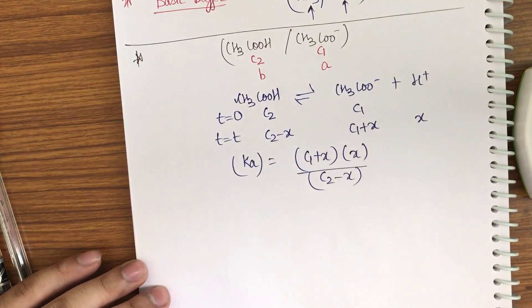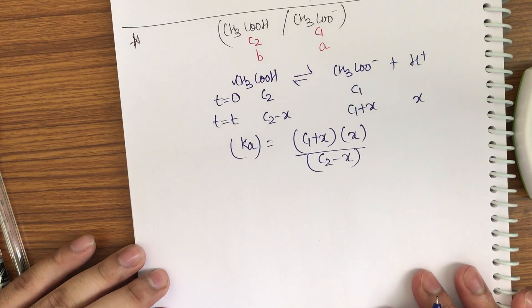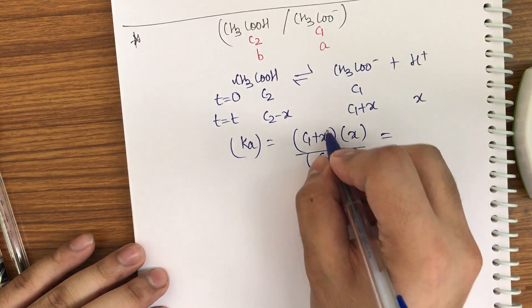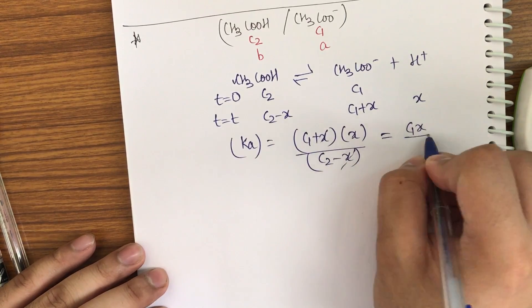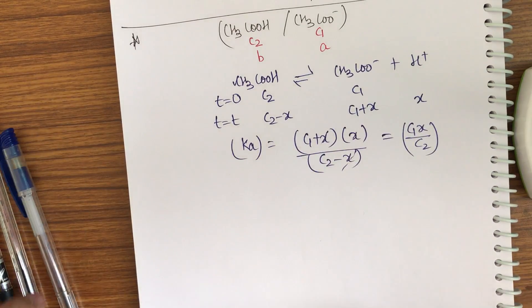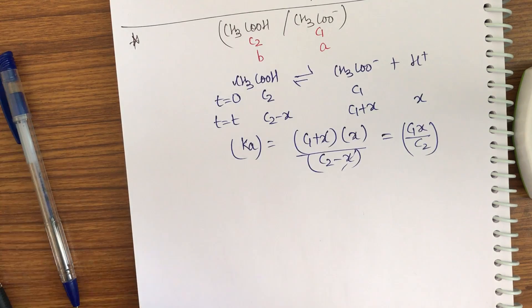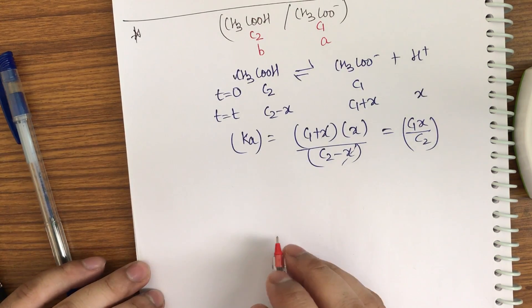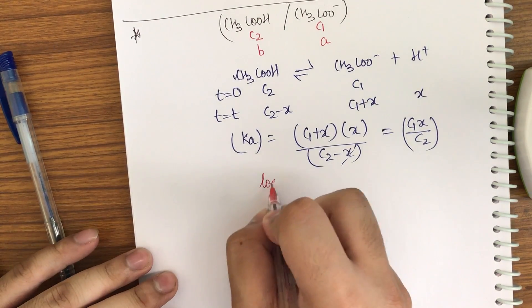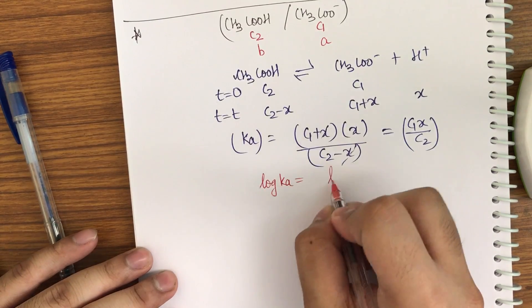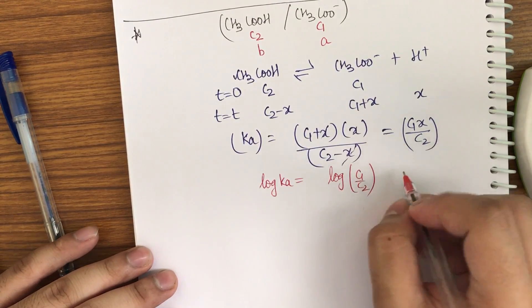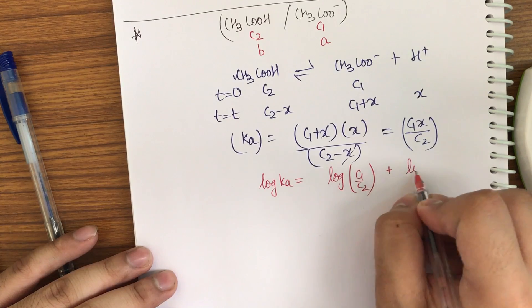The Ka expression is: Ka = (C₁ + x)(x) / (C₂ − x). We can ignore x as it is small, so Ka ≈ C₁·x / C₂. Solving for x (which is [H⁺]): x = Ka · C₂ / C₁. Now I take log on both sides to derive the pH formula.